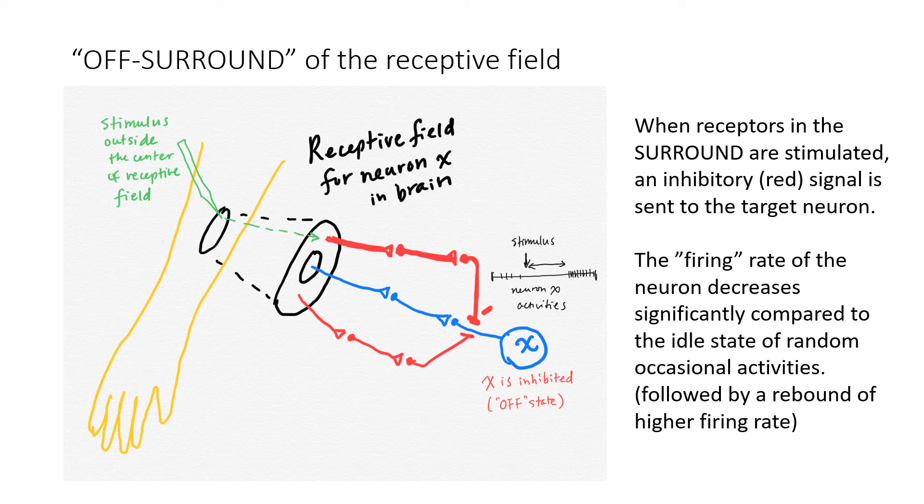In contrast, when something touches the outside area of the receptive field here, called the surround, the red connection is activated and the target neuron is inhibited. You can see the inhibitory pathway there. That's why in the literature, this neuron is said to have an on-center but off-surround receptive field.